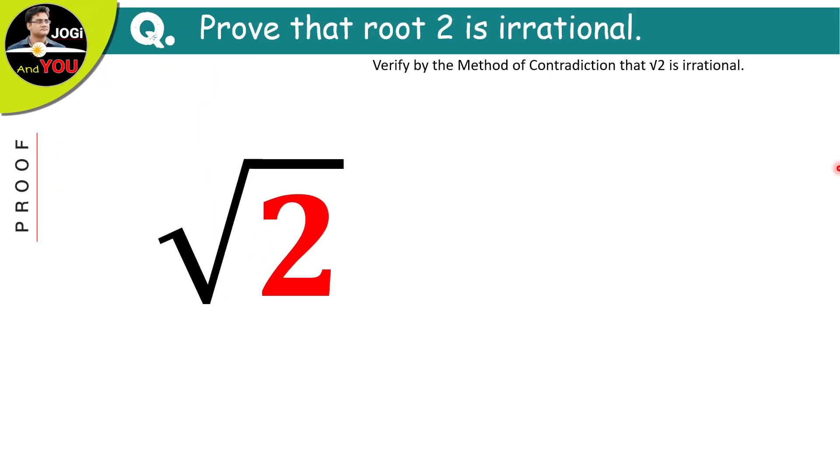Here we have the number root 2 and we have to prove that it is an irrational number.